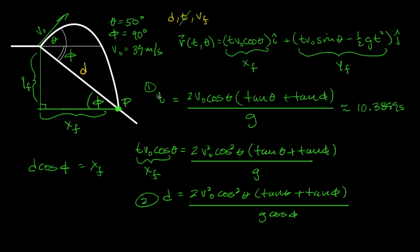Now you have the time and the distance. Plugging in the two angles and the given velocity, you get about 340.01 meters — so approximately 340 meters. That takes care of D, and now all that's left is to find the final velocity.